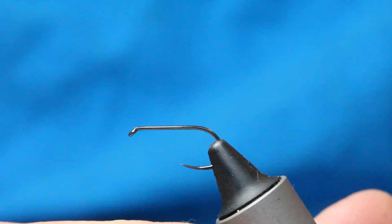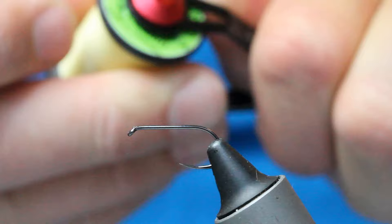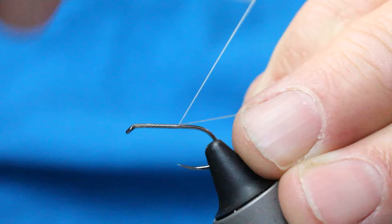The thread I'm using is light Cahill. You can use black. I just happen to have this on the bobbin. We come in behind the eye and just winding down to a point just as it starts to turn and get a little bump here.